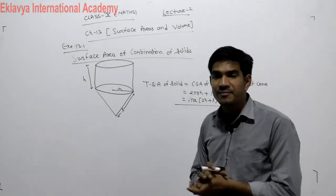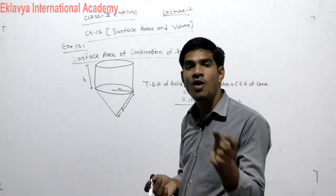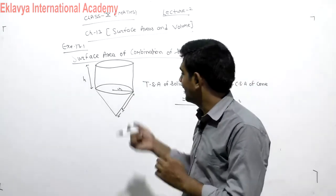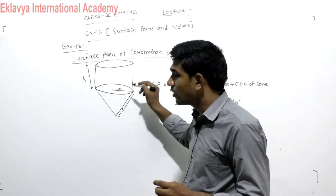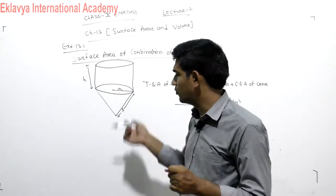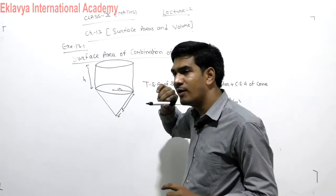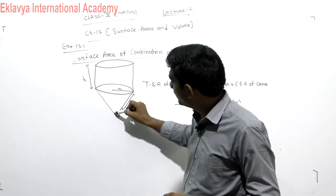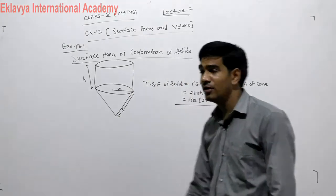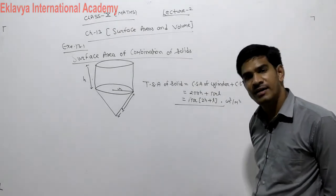Suppose we make a toy of that shape — how much cloth is required to make this toy? So where is cloth required? On this part, this part, this part, and this part — that is the CSA of the cone, which will give the total surface area of the solid.